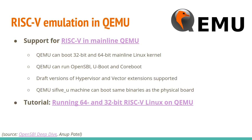RISC-V also has full emulation in QEMU — it's in mainline and can boot both 64-bit and 32-bit Linux kernels. QEMU can run OpenSBI, U-Boot, and coreboot on RISC-V. It also supports draft versions of the hypervisor and vector extensions. The QEMU RISC-V machine can boot the same binaries as the physical RISC-V board. There's a tutorial you can go through about how to run both 64-bit and 32-bit RISC-V Linux environments under QEMU.